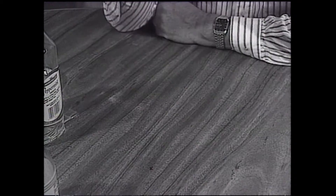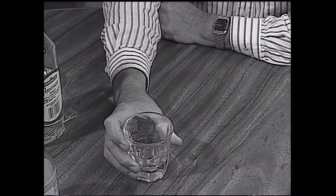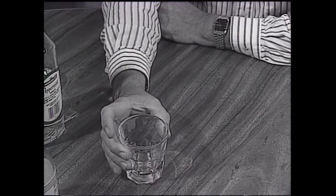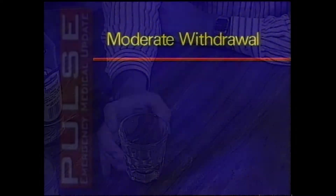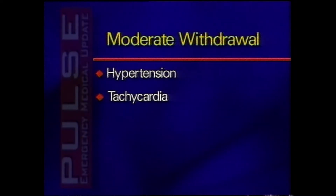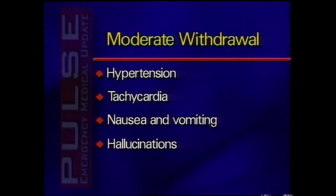Moderate withdrawal usually occurs within 24 hours after decreasing the blood alcohol level, but can occur up to eight days later. Symptoms include hypertension, tachycardia, nausea and vomiting, and hallucinations. These are usually visual or tactile in nature — for example, bugs crawling on the arms or the typical pink elephants.